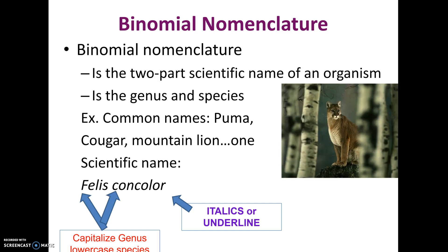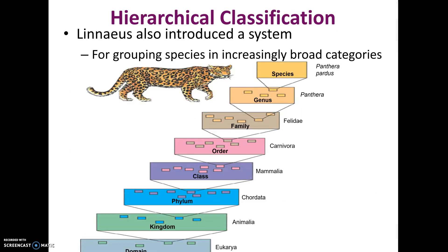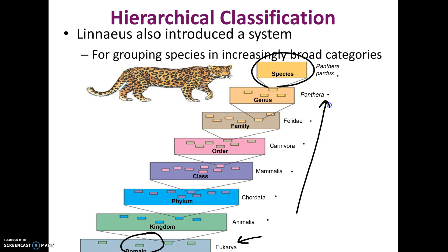We also have levels of classification, which we learned at the beginning of the year. Every living thing is classified according to these levels, the largest being domain. For example, we belong to the domain Eukarya. Below domain it goes: kingdom, phylum, class, order, family, genus, species. These get more closely related the more levels two organisms share, and the groups become more and more specific as we go.